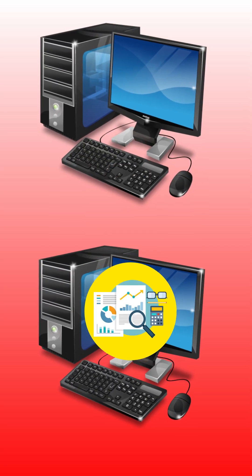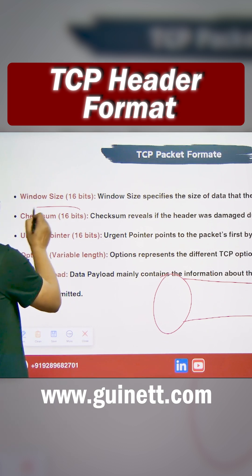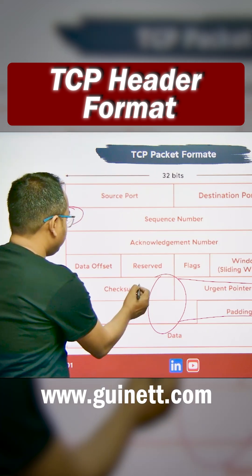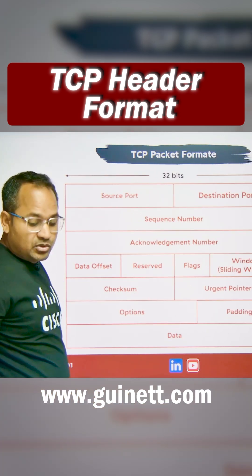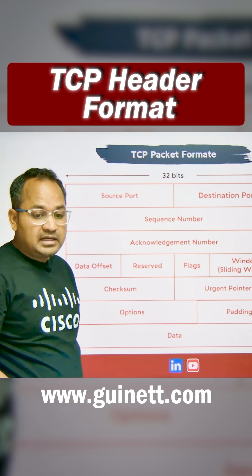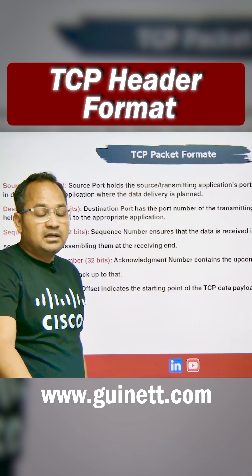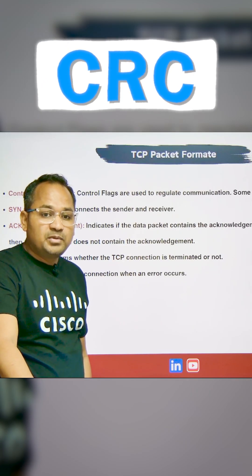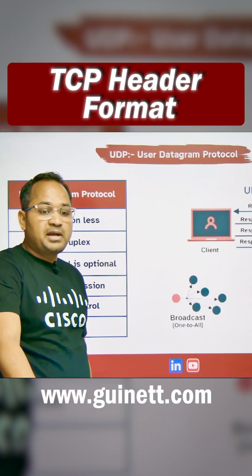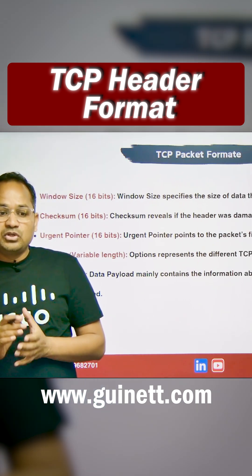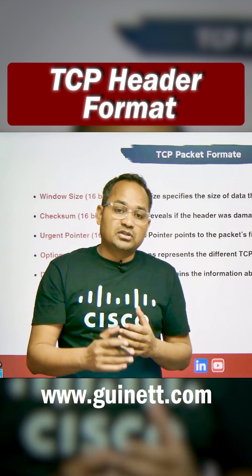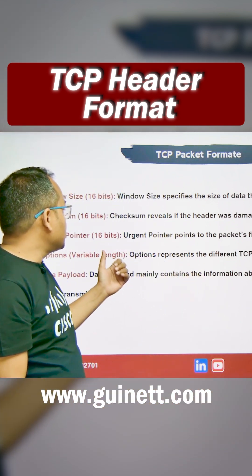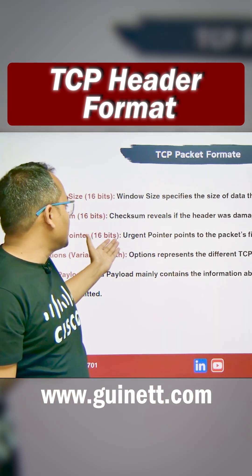The checksum is a 16-bit field — it's a 16-bit value. Similar to how the data link layer uses CRC to make sure the packet doesn't have any error, the checksum is going to ensure that there is no damage and no error during the transportation, during the sending and receiving of the data.